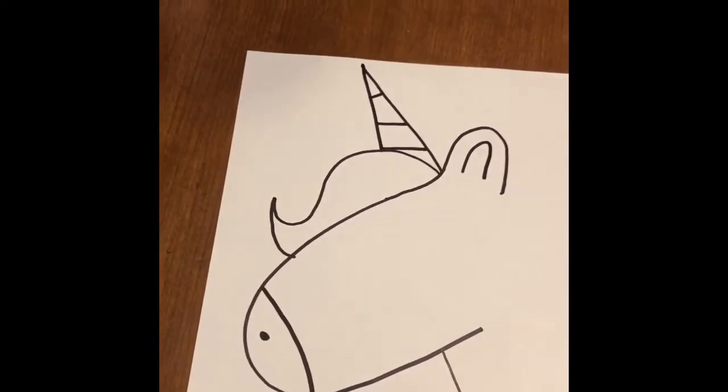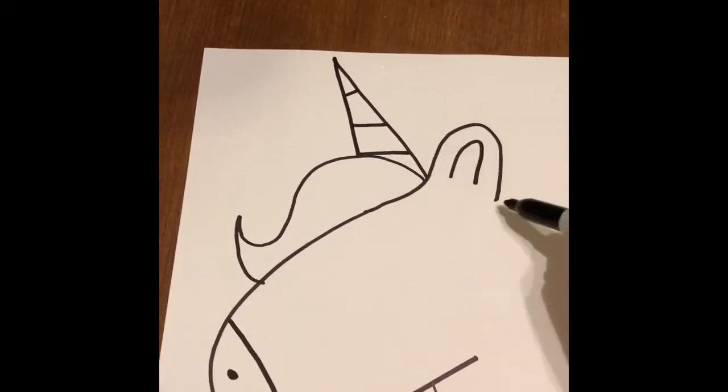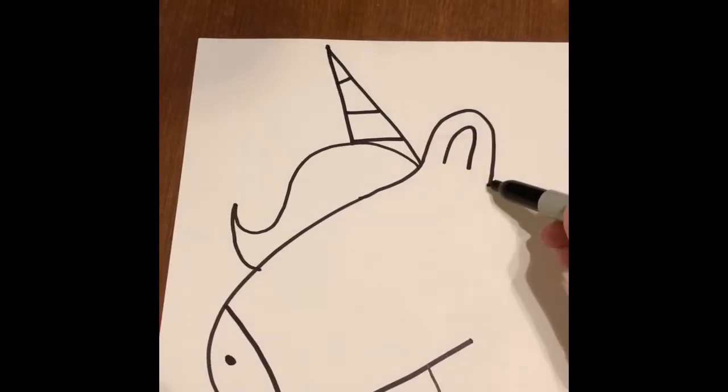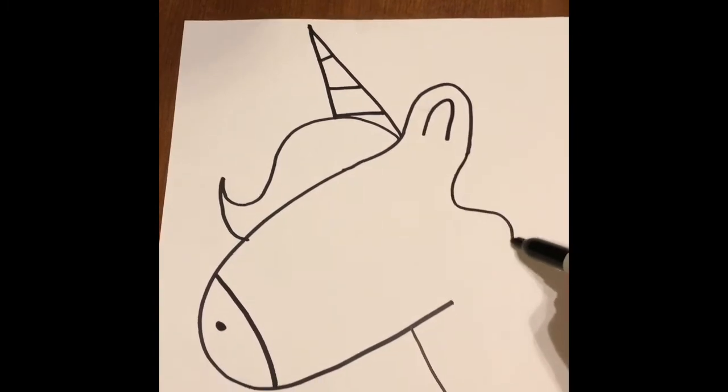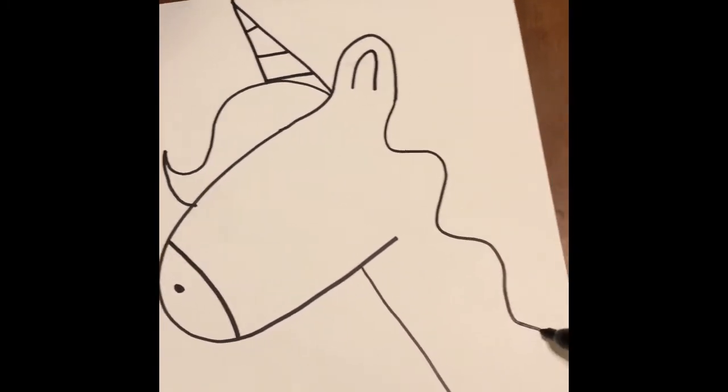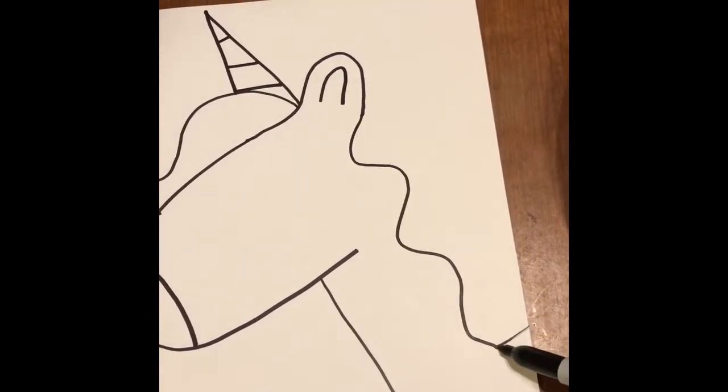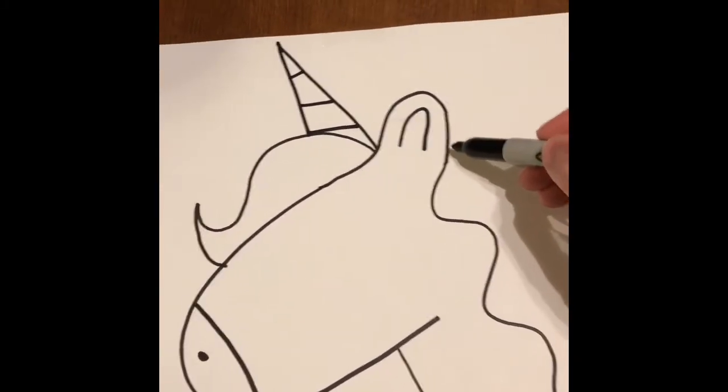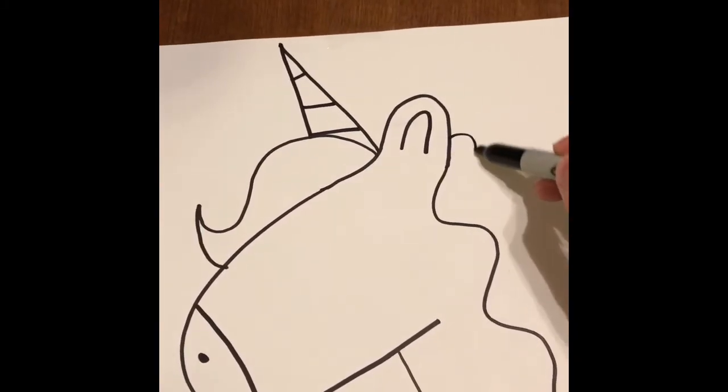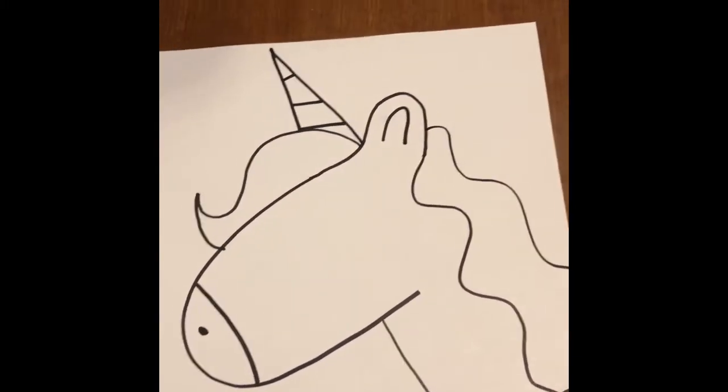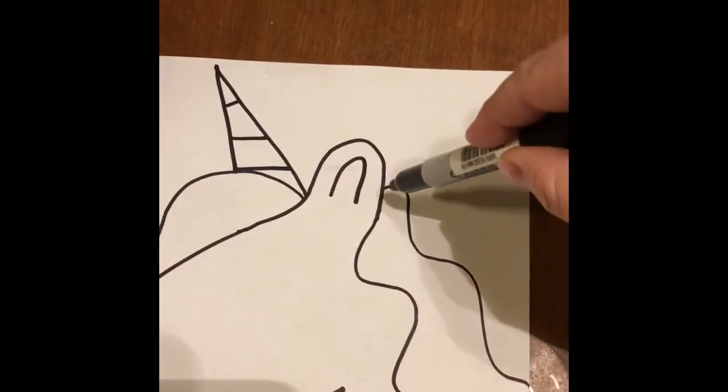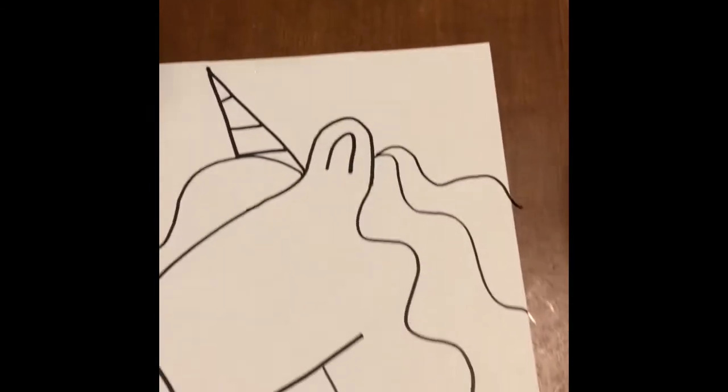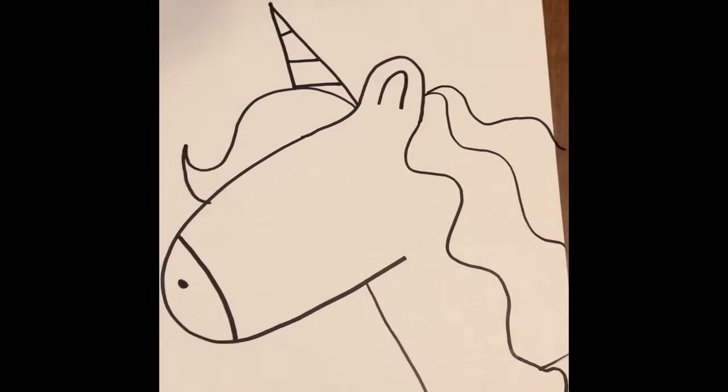Next I'm gonna draw the hair on the back. So what you're gonna do is start right here where the ear ended and you're just gonna make a wavy line all the way down. Big wavy line all the way off the page. I'm gonna come up a little bit further on my ear and do the same thing. A wavy line all the way off my page and one last one. Another wavy line. There's my hair on the back of the unicorn.